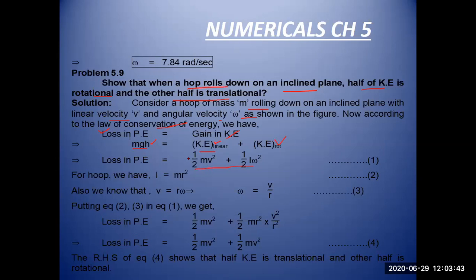Inertia for the hoop formula is I = mr². To calculate angular velocity, the formula is omega = v/r. After putting all values in this equation of kinetic energy, you are getting this relation. If you look at loss in potential energy, that is equal to ½mv² plus ½m...